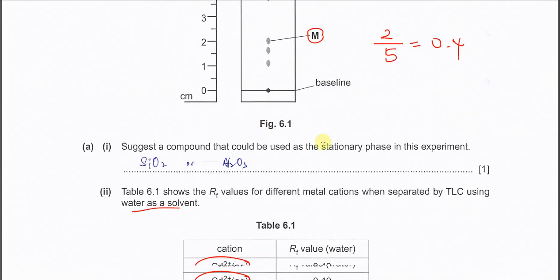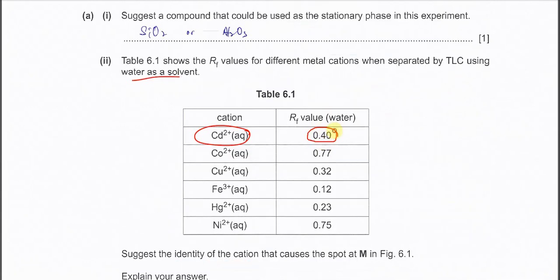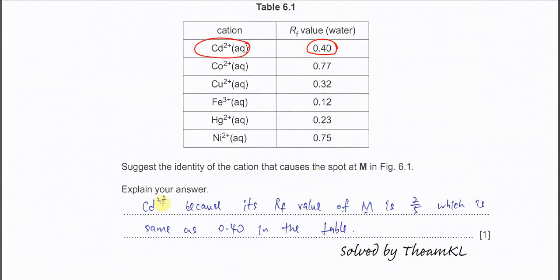The M means this one should be cadmium ion because the RF value is the same as what we calculated, 0.4. It's cadmium ion because its RF value of the M is 2 over 5, which is the same as 0.4 in the table.